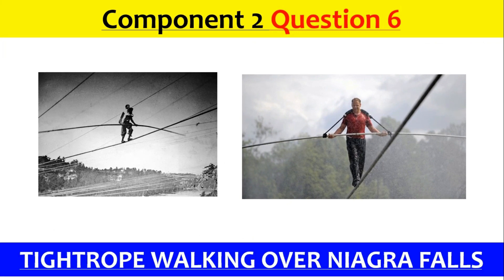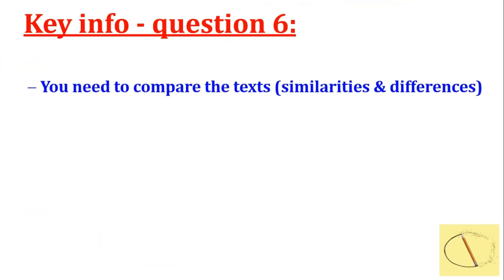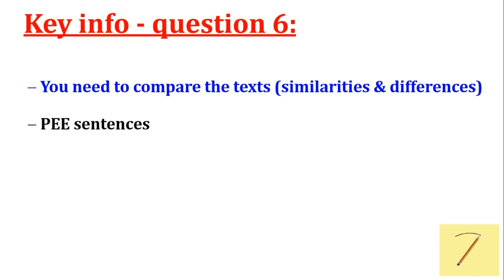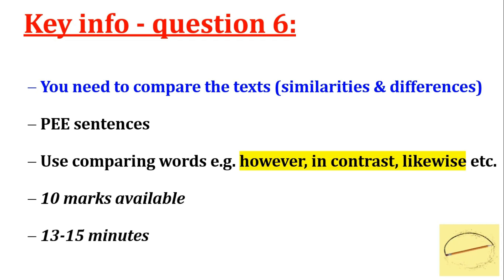This is the last question on paper two about tightrope walking over Niagara Falls. It's the second question where you're looking at both texts, and the first and only question in the exam where you're comparing and contrasting the extracts. Key info for question six: you need to compare the texts, say what's the same and what's different. Use PE sentences and comparing words or adverbials like 'however,' 'in contrast,' 'likewise,' 'in comparison.' 10 marks available, so 13 to 15 minutes.